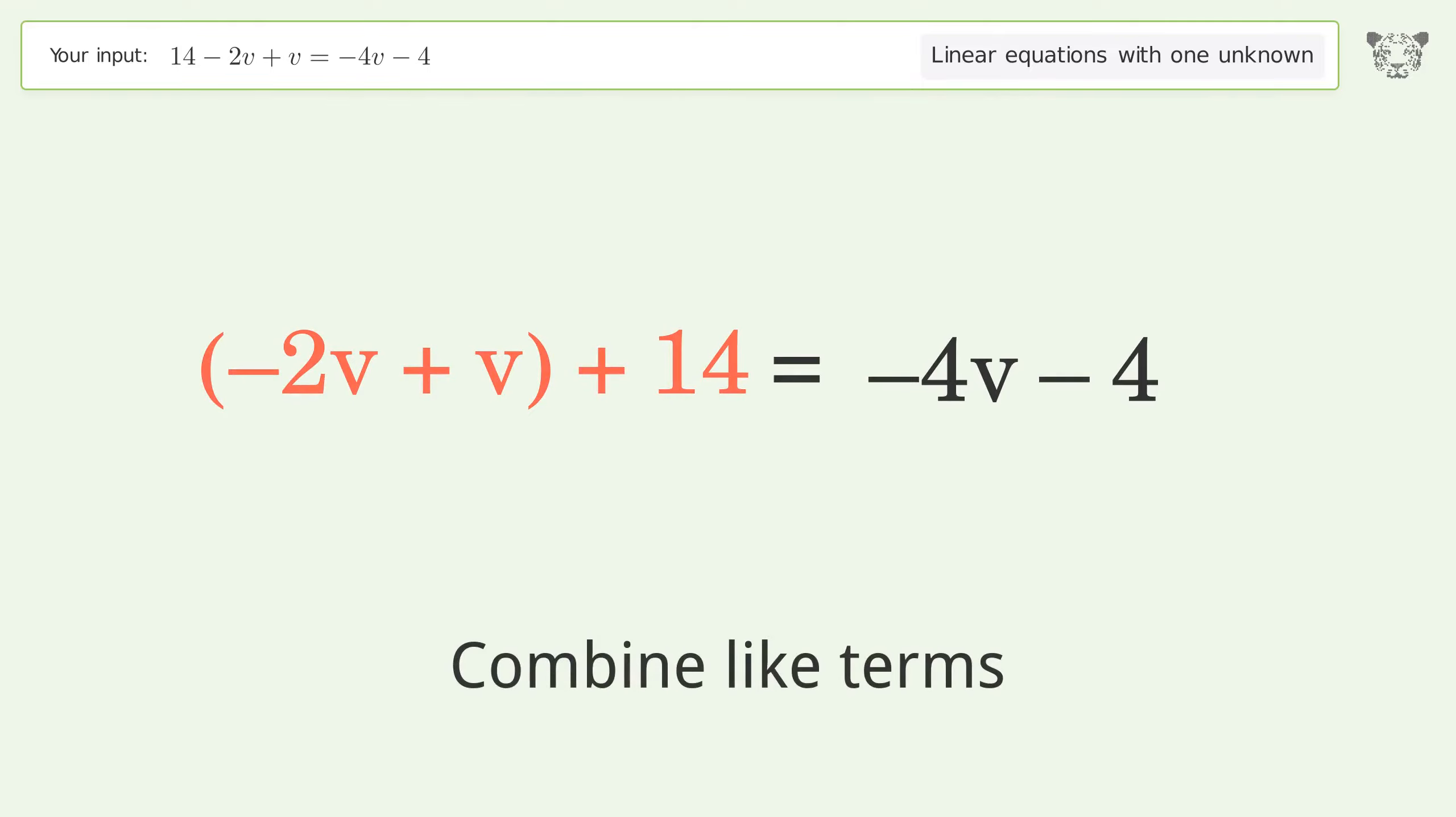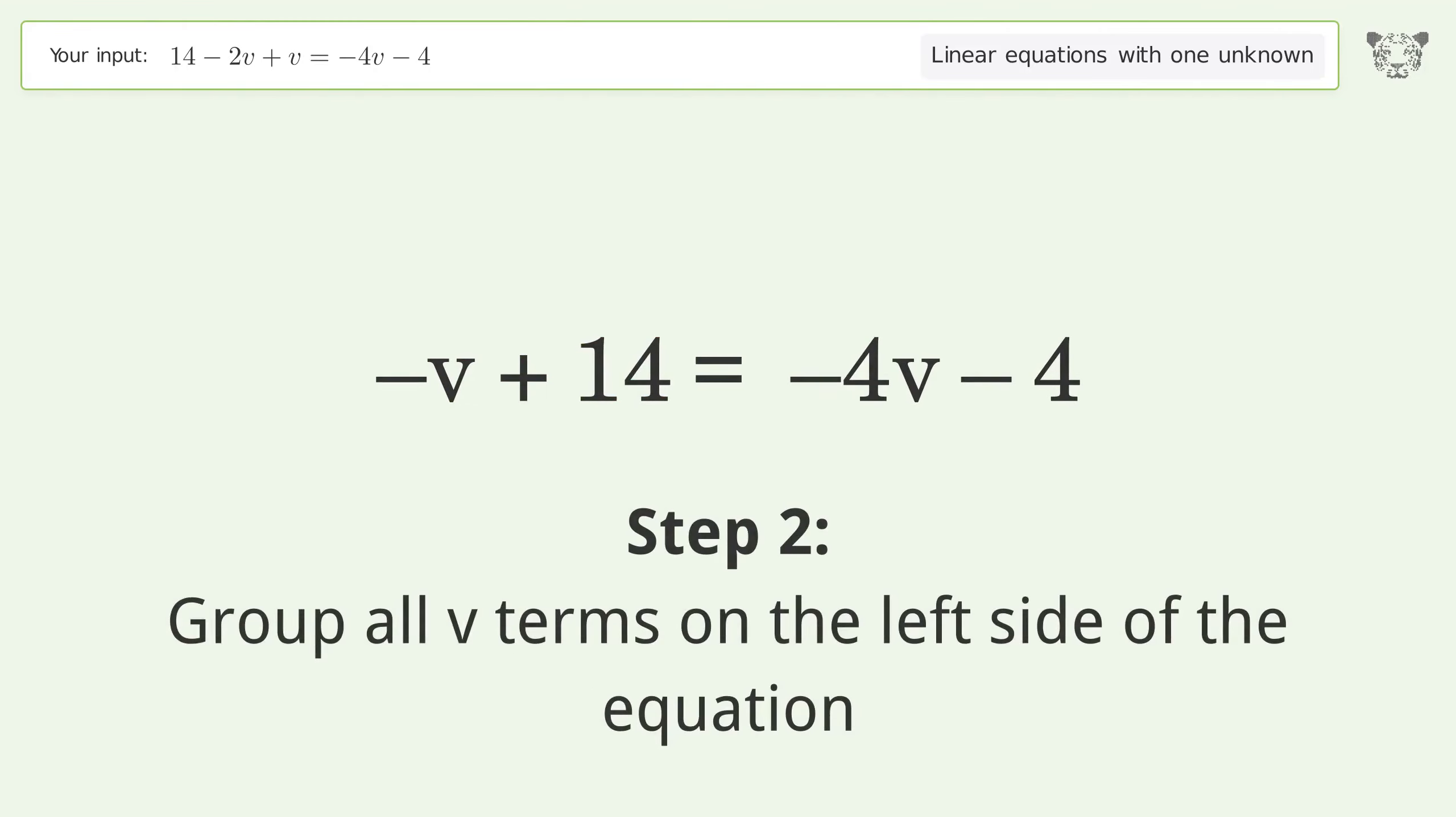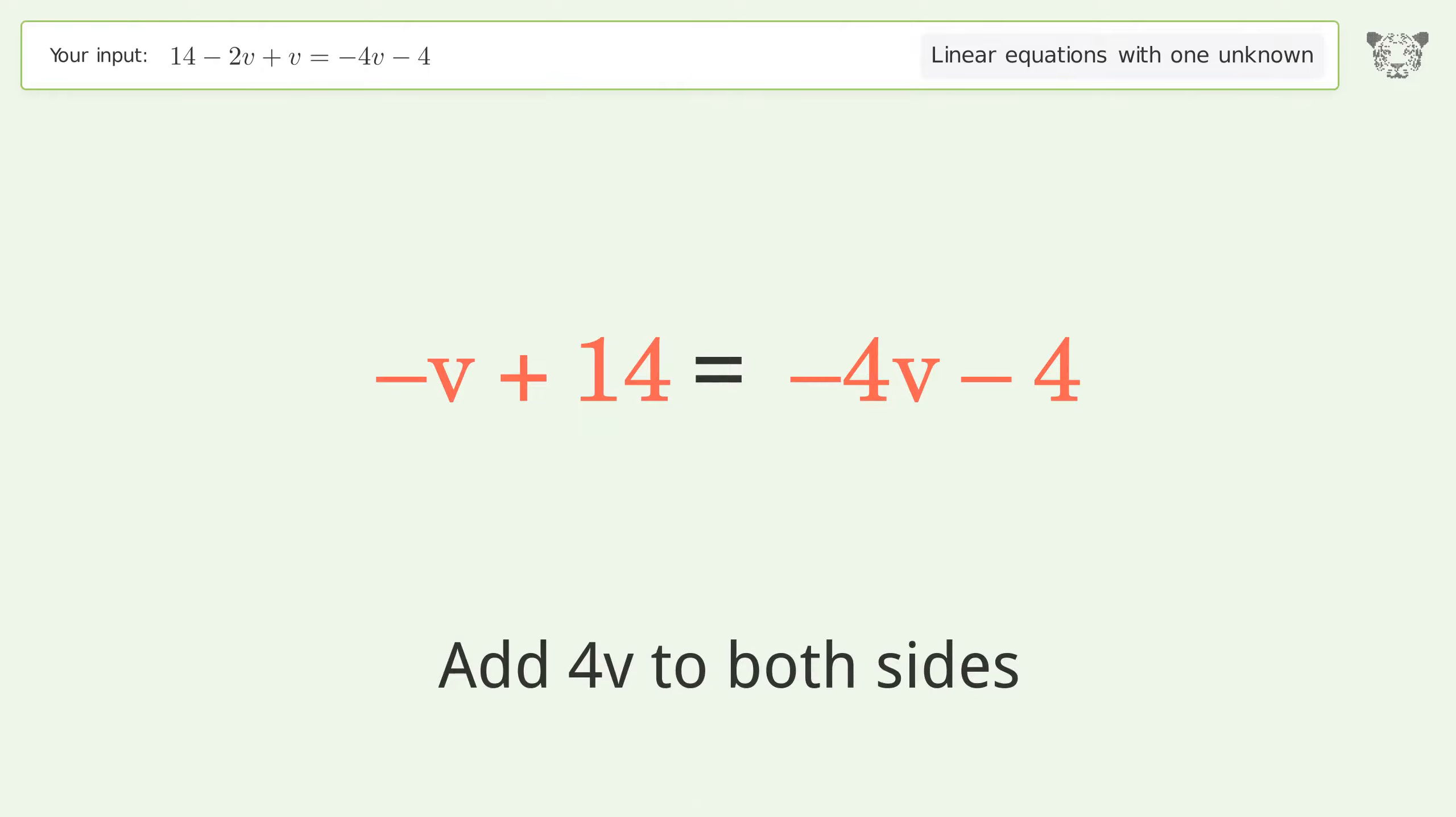Combine like terms. Group all v terms on the left side of the equation. Add 4v to both sides.